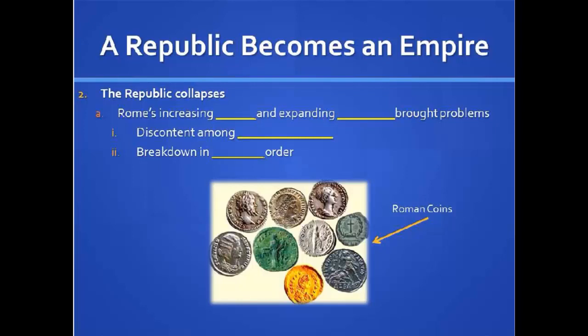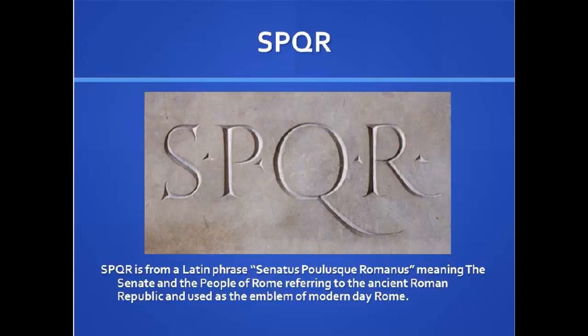Rome's increased wealth and expanding territories brought problems. Discontent among the lower classes and the breakdown of military order were two of the main reasons why the republic collapsed. The lowest and the poor were having problems, and the armies and the military were not following orders, were not doing what they were told to do, and were not being really well trained anymore — they just got so big. SPQR is a Latin phrase meaning Senatus Populusque Romanus, meaning the Senate and the people of Rome, referring to the ancient Roman Republic and used as the emblem of modern-day Rome. Now we are in that transition of this changing.